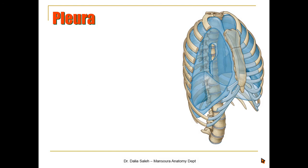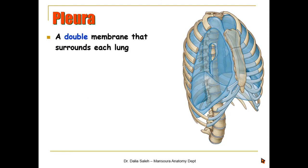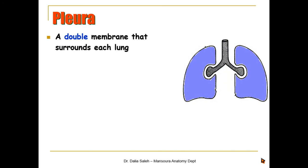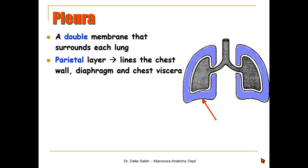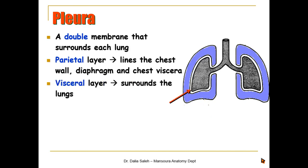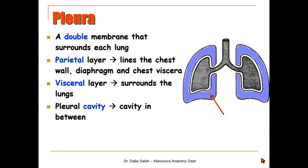The pleural cavities are two in number — one on the right and one on the left side of the chest — each containing its corresponding lung. Each cavity is made of a double layer of serous membrane. The outer layer, the parietal layer, lines the chest wall and diaphragm and covers the chest viscera. The inner layer, the visceral layer, surrounds each lung completely and also surrounds the root of the lung. The pleural cavity is the space between the parietal and visceral layers.